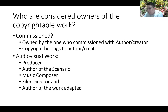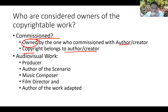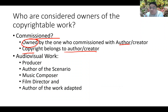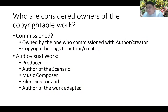For commissioned work — if you were commissioned by somebody — the ownership class would belong to the one who commissioned it plus the author or creator, and the copyright class would belong to the author or creator. The main message is that you need to be aware legally of your copyright before you enter into an agreement. Even if the company is the owner, you can agree with the company beforehand for joint ownership. The people involved would include the producer, author of the scenario, music composer, film director, and author of the adapted work.